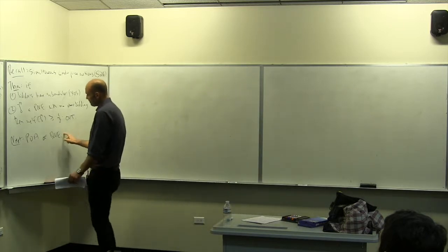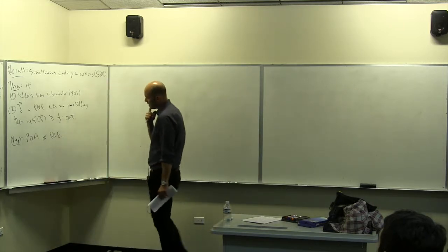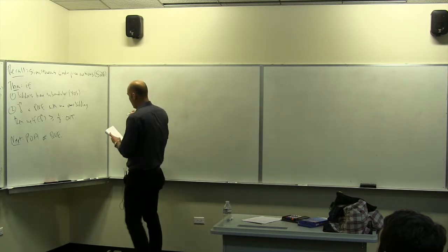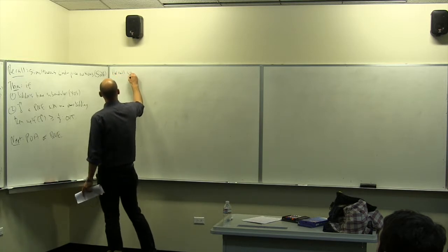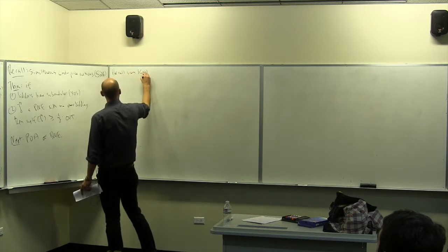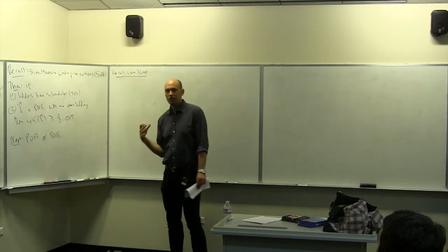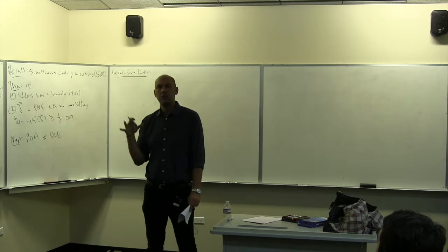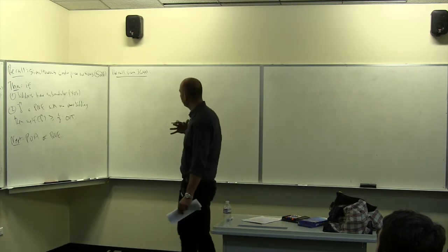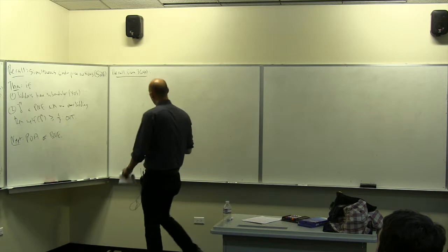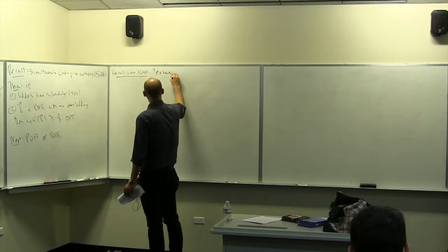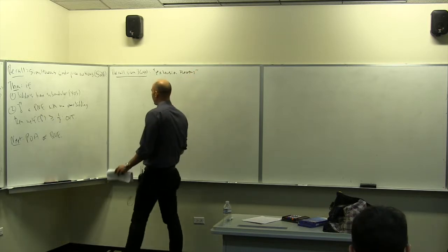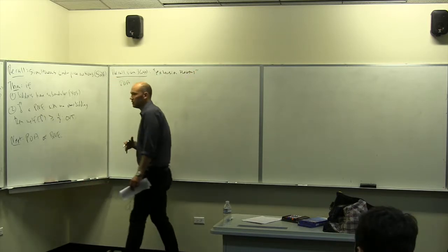How are we going to prove bounds on how good Bayes-Nash equilibria are? Here's the plan. I'm going to ask you to remember — not in detail but in spirit — one of the major themes from the price of anarchy section of last quarter's course, 364a, namely extension theorems.